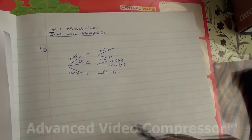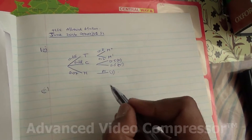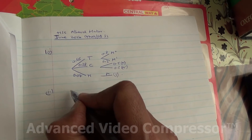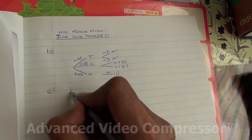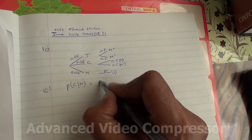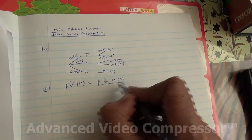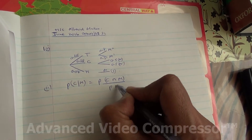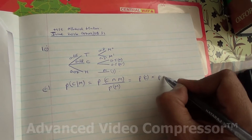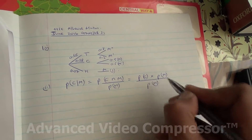Now this is a fully labelled tree diagram. And for the second part, we need to find the probability that Eamon's breakfast drink is coffee, given that he has milk in it — probability of coffee given milk. This is a conditional probability, and therefore we're going to be using this formula.